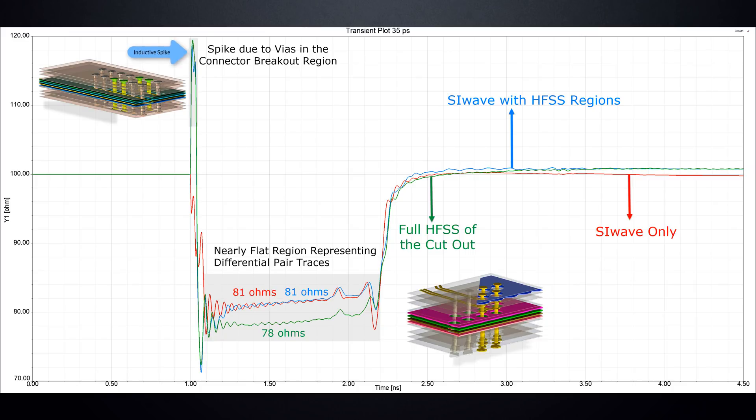The 3D discontinuities are captured more accurately in SI-Wave with HFSS Regions, as shown by this inductive spike due to the vias in the connector region. This gives a more accurate prediction of channel performance.